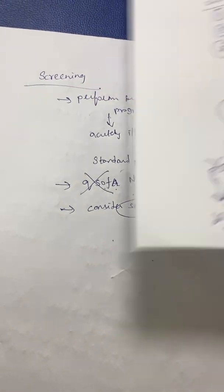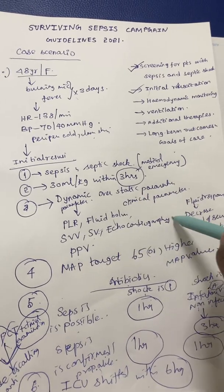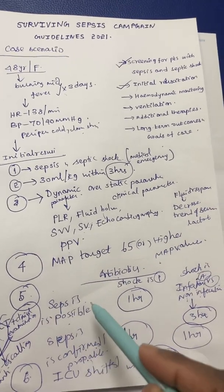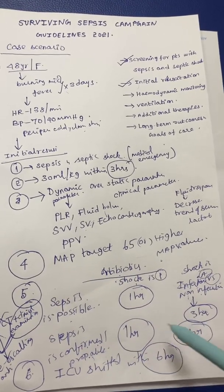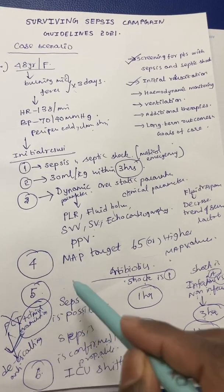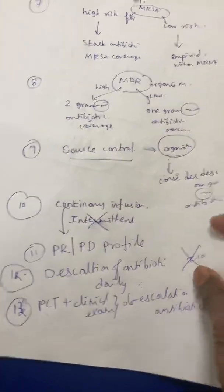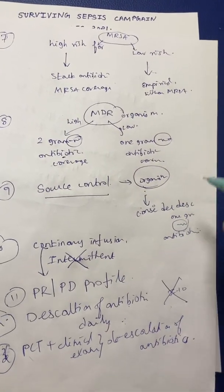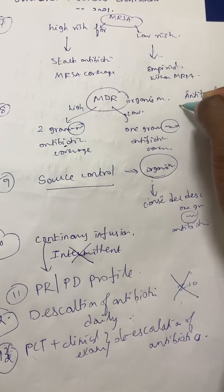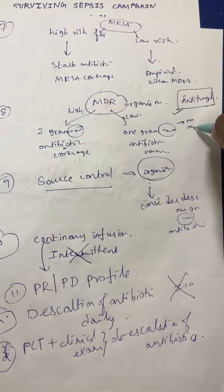In summary for initial resuscitation: sepsis and septic shock are medical emergencies; 30 ml/kg fluid should be started within three hours; dynamic parameters should be favored over static parameters; MAP target is 65 mmHg or more; fluid responsiveness assessed by decreasing lactate trend. Antibiotics: start within one hour if shock is present or sepsis is probable/confirmed; within three hours if only possible with no shock. For antifungal therapy: start if the patient is high risk for fungal infections; do not start if low risk. There is no recommendation for antiviral therapy in sepsis.